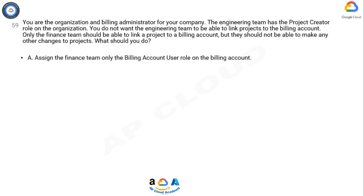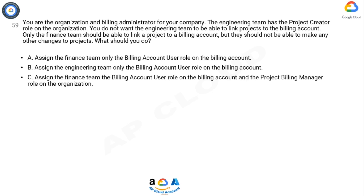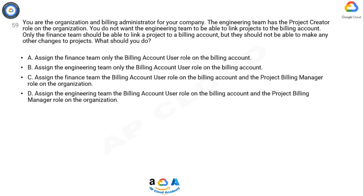Option A: Assign the finance team only the billing account user role on the billing account. Option B: Assign the engineering team only the billing account user role on the billing account. Option C: Assign the finance team the billing account user role on the billing account and the project billing manager role on the organization. Option D: Assign the engineering team the billing account user role on the billing account and the project billing manager role on the organization.